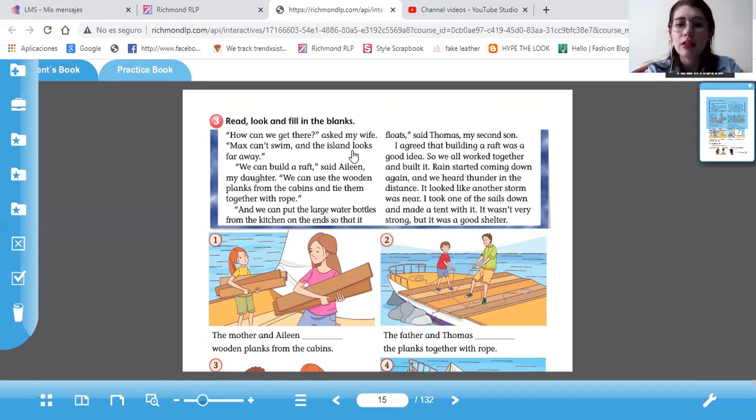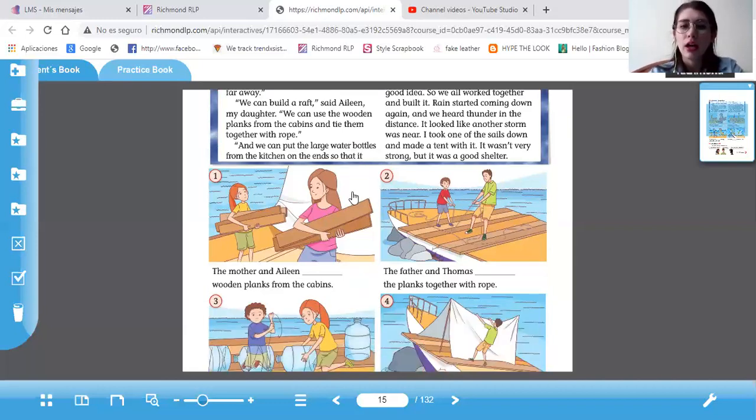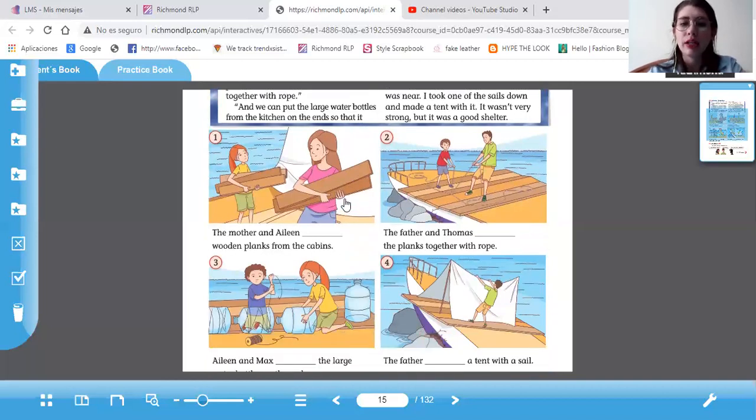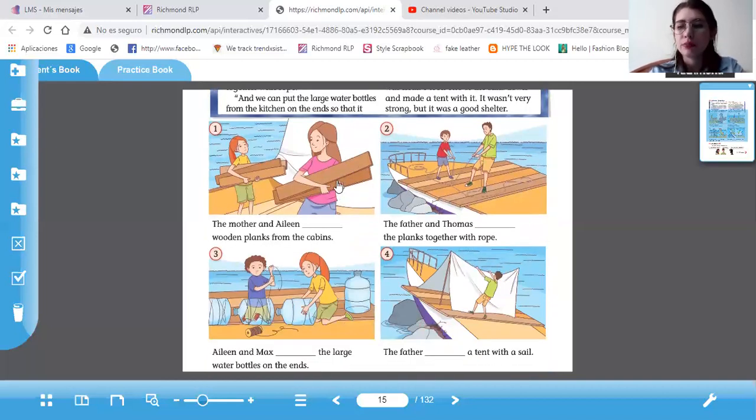Rain started coming down again and we hear thunder in the distance. It looked like another storm was near. I took one of the sails down and made a tent with it. It wasn't very strong, but it was a good shelter.